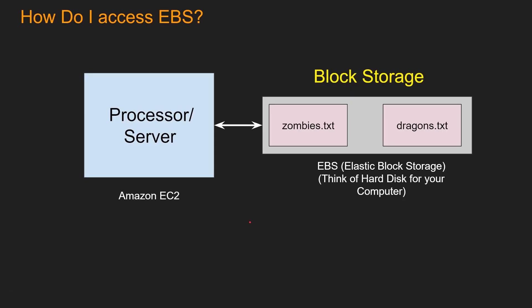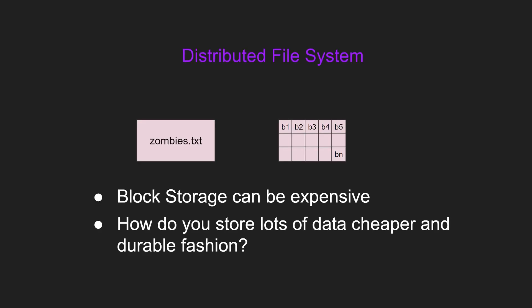So how do you access this block storage? This block storage in AWS is known as EBS, or Elastic Block Storage. You can think of that as your hard disk for your computer. To access your hard disk, you have to attach it to your processor or server. Similarly, to access EBS in AWS, you have to attach it to an Amazon EC2, or Elastic Compute Cloud. So block storage is very fast; however, it could be very expensive.